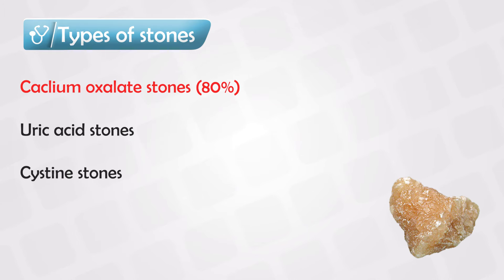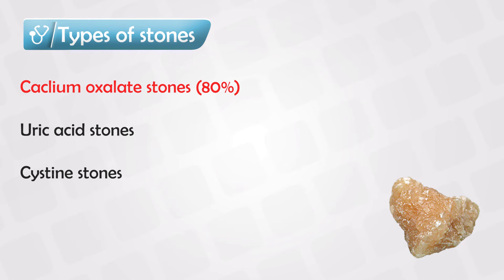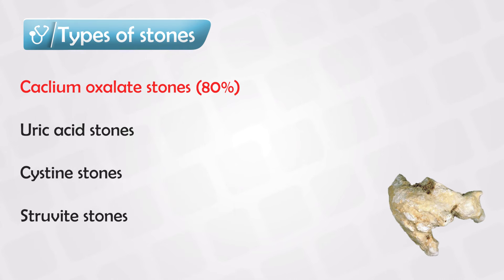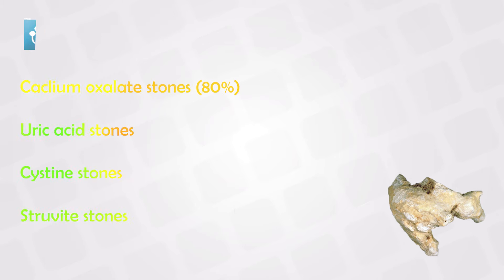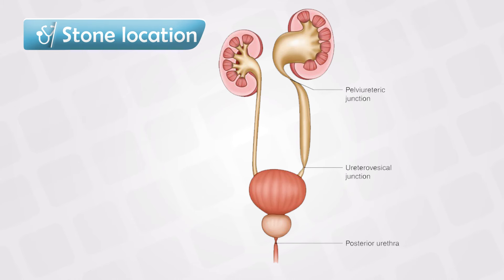Some unlucky patients might have an autosomal recessive disease known as cystinuria, which presents with cystine stones. And if the patient is really unlucky, they can have certain bacteria in their urine — like Proteus bacteria, for example. These special bacteria can metabolize the urine and its content and produce struvite stones. Struvite stones are very difficult to treat and they often require surgery.